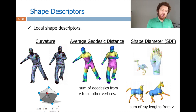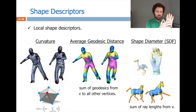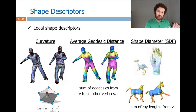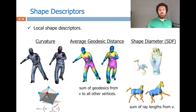Curvature measures the amount of deviation of a point from being planar. One way to compute it: two pi minus the sum of the incident angles. On a flat region, the angles sum to two pi, giving zero curvature. If the point is extruded into a tip, the surrounding triangles have smaller angles, so the sum is less than two pi, yielding a positive curvature. Average Geodesic Distance (AGD) is the sum of geodesic distances from vertex V to all other vertices. It tends to be small at the center of a shape and high at tips, making it good for tip detection.